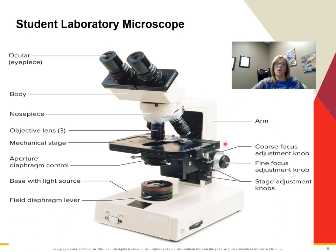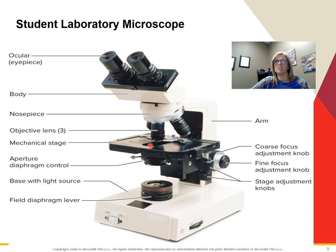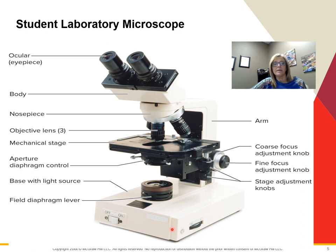This is the arm — you are always going to hold the microscope by the arm and by the base when you carry it so you don't drop it, because they're very expensive. We have the stage or mechanical stage, and there is a stage adjustment knob. This is the diaphragm control — I prefer iris diaphragm or just diaphragm, not aperture. Here you have the light source, the base, the light control, and the power switch. These are on your quiz.